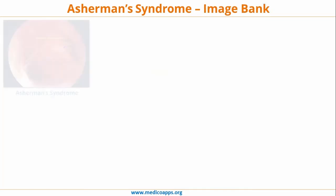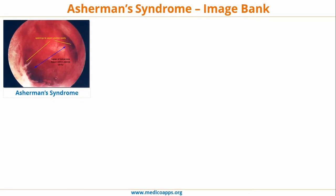Now let's look at some images. This is the hysteroscopic finding in a case of Asherman's syndrome — you can see fibrous bands clearly visible within the uterine cavity.